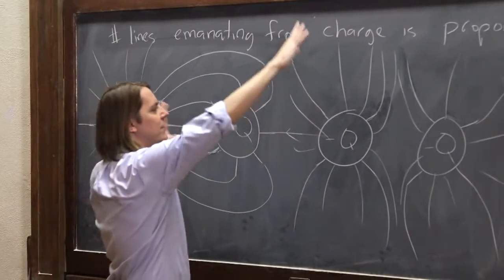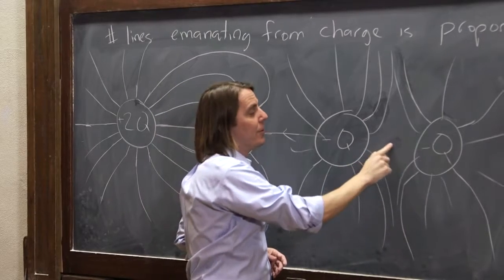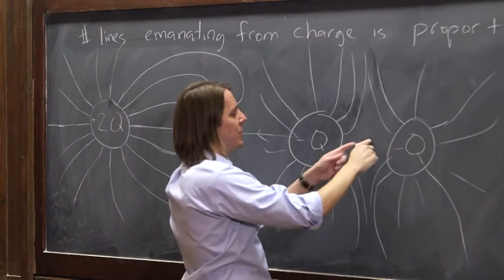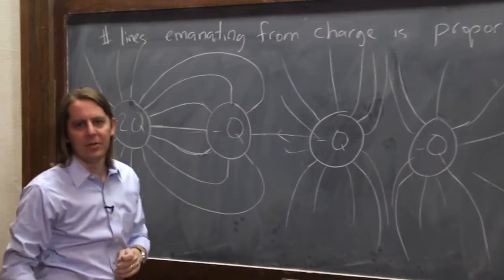You get the idea. You get a lot of field density as you go around. But right here, you have none. That's because the electric field is zero there. If you were to calculate the electric field exactly between two equal charges, it would cancel out. So here, you've created a region that's sort of devoid of lines.